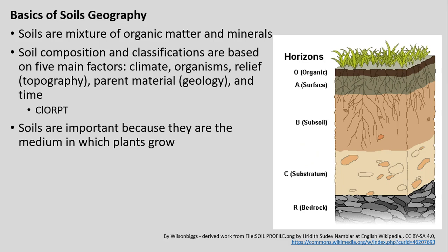Soil composition and classification are based on five main factors, which we can remember using the acronym CLORPT: Climate, Living organisms within the soil tied to that organic matter component, Relief or topography, Parent material — the actual rock geology it's made from — and Time, meaning whether there's been enough time for rock to be broken down into soil. Soils are important because they're the medium in which our plants grow, influencing the geography and distribution of vegetation.